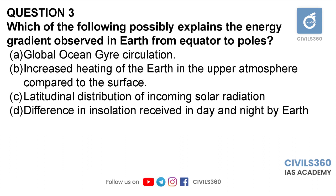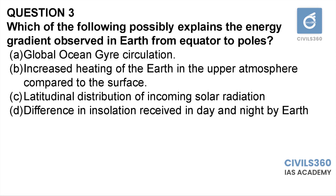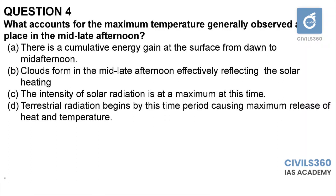Because of this imbalance of energy, there are several mechanisms to compensate and rebalance heat across latitudes. Global ocean gyre circulation is one such method. It is a consequence of the difference in energy received by different latitudes, not a cause. Third question: option C.